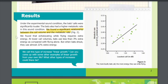We found that echolocating while flying requires extra energy. At lower call volumes, bats use less than 3% extra energy as compared with flying alone. But when bats shout, they use almost 22% extra energy.